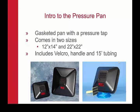The pressure pan is basically just a gasketed pan with a pressure tap — pretty simple. It comes in two sizes: 12 by 14 and 22 by 22. It's got a gasketed edge to fit tightly against the ceiling or wall where the duct is. It includes a patch of Velcro on the pan and a handle that has Velcro on it that sticks to that, and 15 feet of tubing.